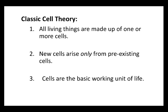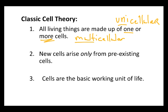Point one: all living things are made up of one or more cells. If you're made of one cell, the term used is unicellular — uni means one. And if you're made of more than one cell, you are multicellular. Multi means many.